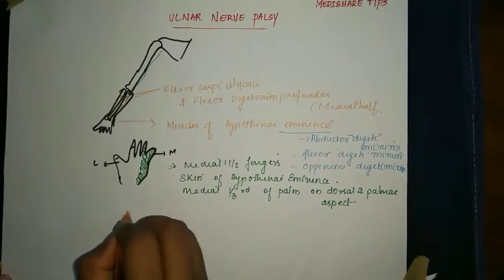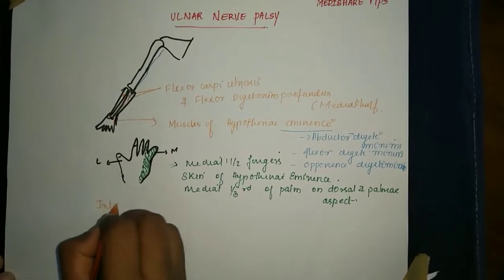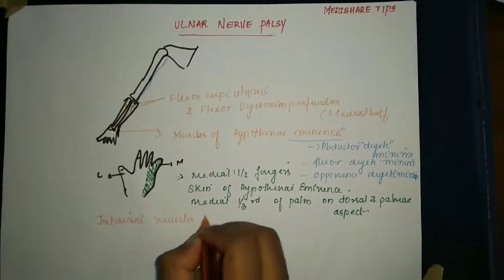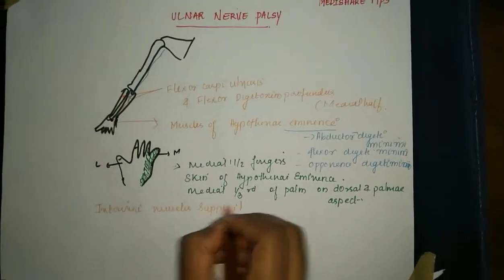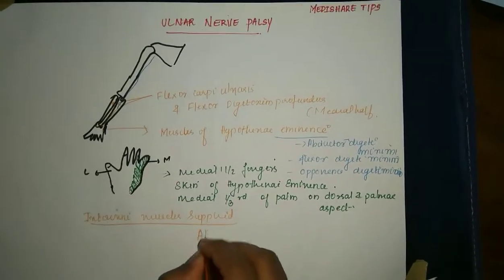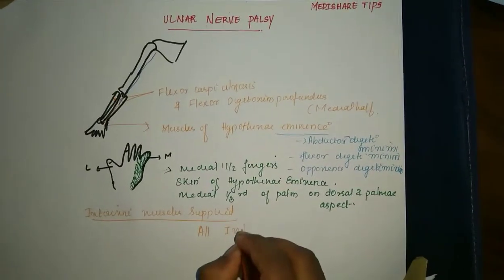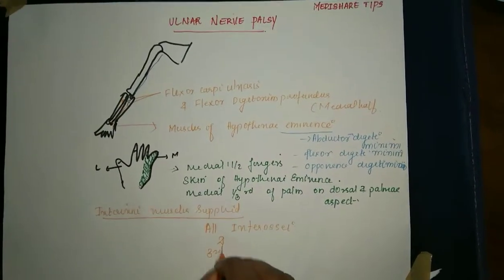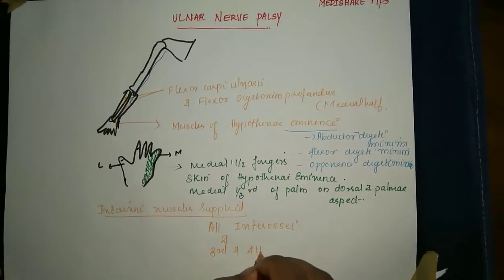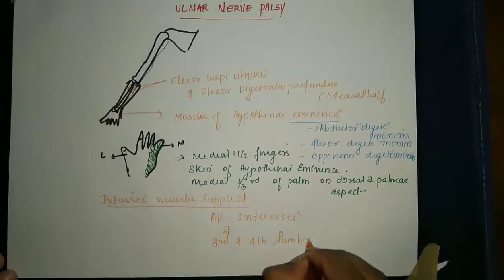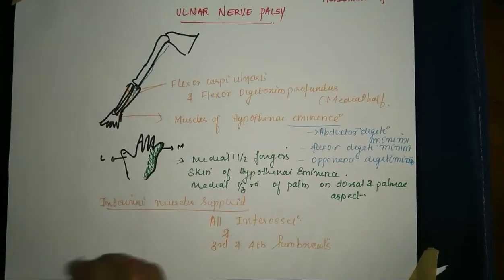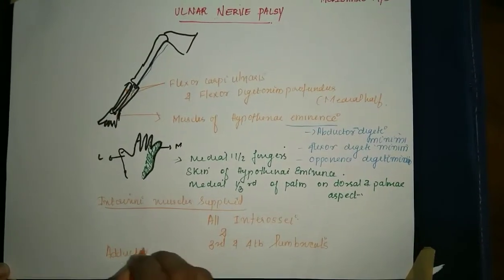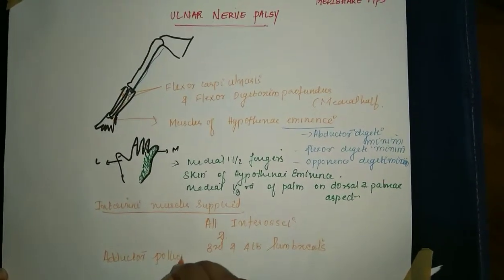The other intrinsic muscles supplied by the ulnar nerve are all the interossei, the third and fourth lumbricals, and the deep muscle of the palm — the adductor pollicis.